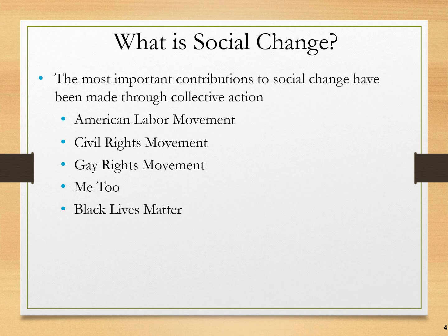Examples of intentional social change include the American labor movement — the union movement — which had dramatically more impact at the beginning of the 20th century but still exists today. The civil rights movement in the 1960s and 70s sought equal rights for Black people and other racial and ethnic groups. The gay rights movement continued into the modern era, and newer movements include the Me Too movement, associated with modern feminism, and Black Lives Matter, which has connections to the civil rights movement but is its own distinct social movement.